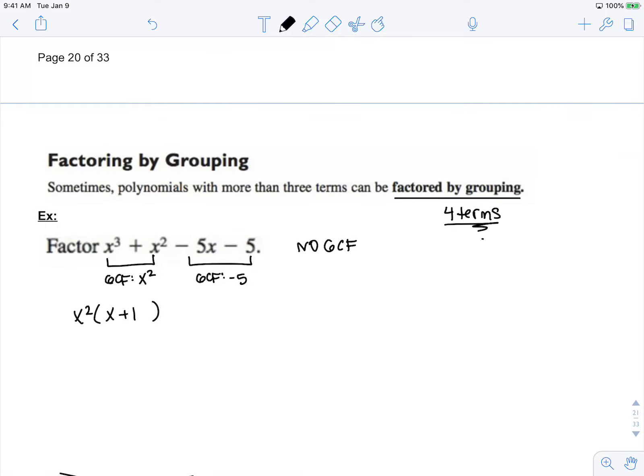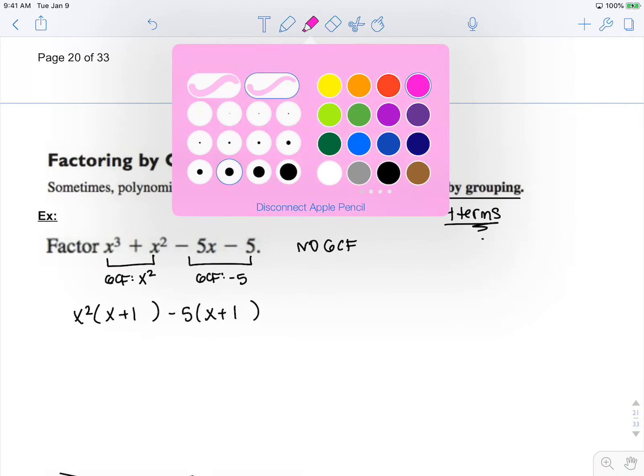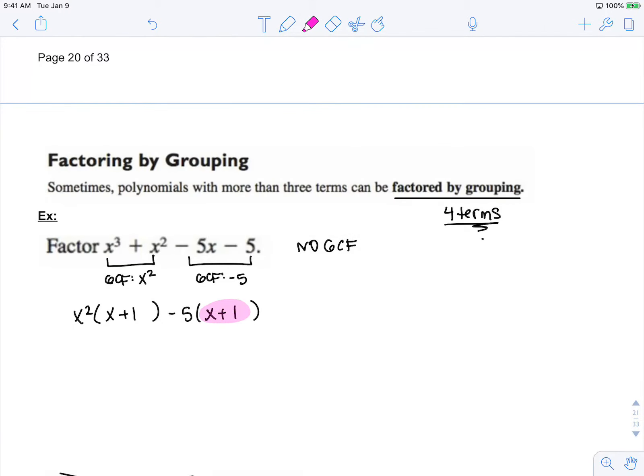If I factor out negative 5 from my second group, I'm also left with x plus 1. If you do this correctly, there should be a binomial GCF that pops out the same.